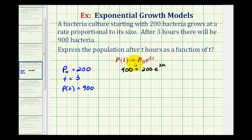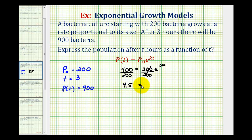To solve this exponential equation we'll start by isolating the exponential part — e raised to the power of three k — so we divide both sides by 200. This simplifies the left side: 900 divided by 200 is 4.5. So we have 4.5 equals e raised to the power of three k.